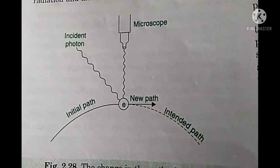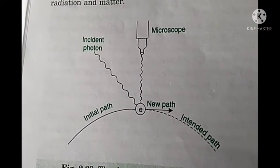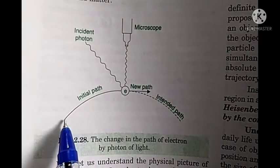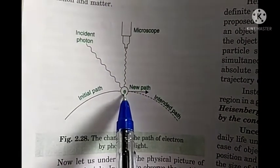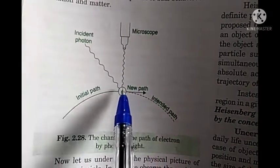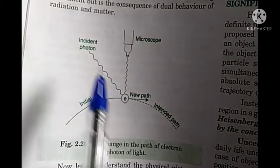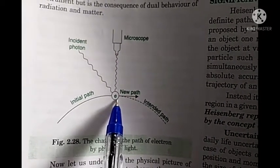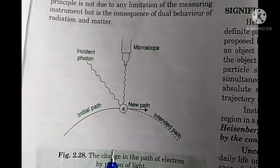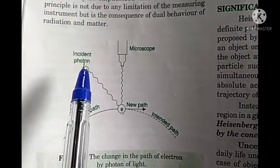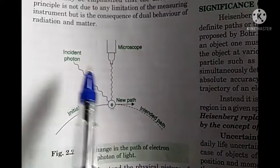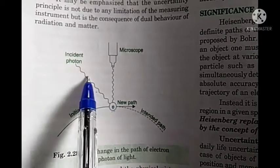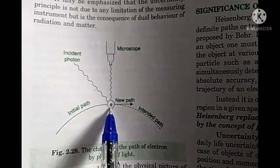To understand Heisenberg's uncertainty principle, let's take an example. Suppose we want to determine the position and velocity of a moving electron. To identify its position accurately, we have to use a photon of smaller wavelength, because the electron is a very small particle and the wavelength of the incident radiation should also be very small. Only then can we identify the position accurately. So here we are using a photon or radiation of smaller wavelength, which is allowed to fall on the electron, so we can determine the position accurately.